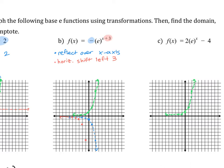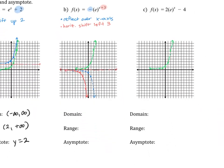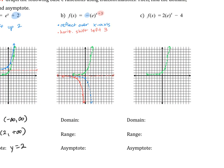You take all the points from the reflected graph and shift them all left 3. You'll notice that since our graph wasn't shifted up or down, our horizontal asymptote is still at y = 0, despite the reflection and despite the horizontal shift. Our domain is all real numbers, so negative infinity to positive infinity. Our range is everything below 0, so negative infinity to 0. And our horizontal asymptote was unchanged from our parent function because there was no vertical shift.